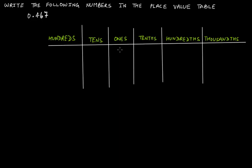Let's take a few more. If the number is 0.467, at the ones place you have zero, at the tenth's place you have four, at the hundredth's place you have six, and at the thousandth's place you have seven.